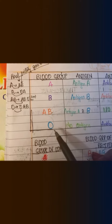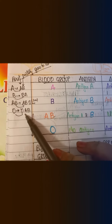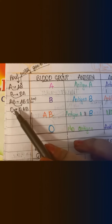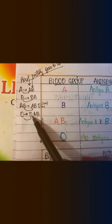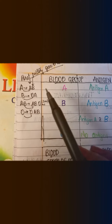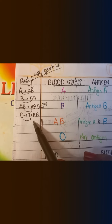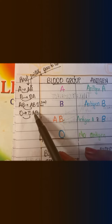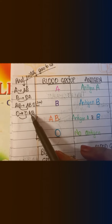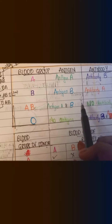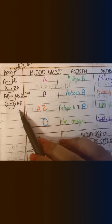Then coming to O, it has no antigen. Just think of the zero as O. O has antibody A and antibody B — both.